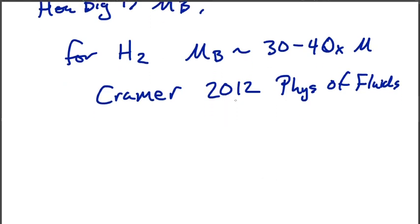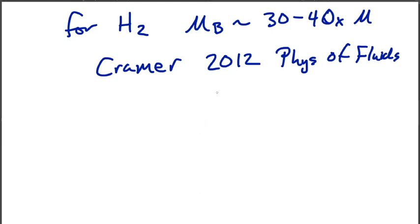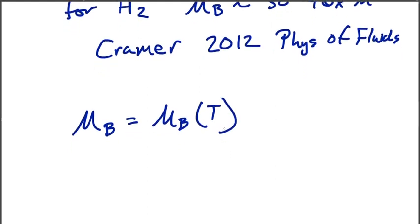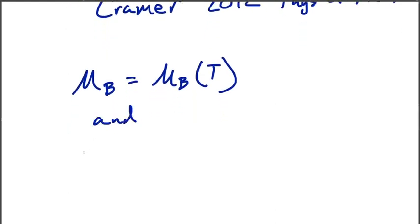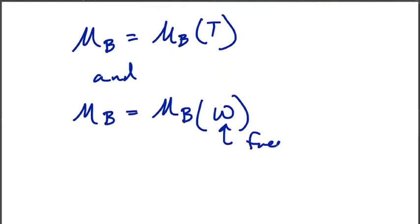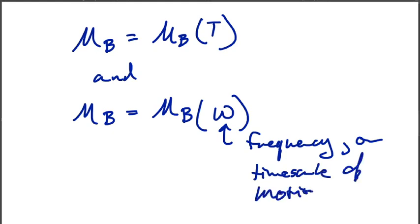Something else about mu_B is that mu_B is generally dependent on the thermodynamics. So mu_B is a function often of the temperature, can vary substantially with temperature. And mu_B is also very tied, unlike the dynamic viscosity, to the rate at which the fluid flow is happening. If we have some sort of frequency or timescale of motion, the bulk coefficient of viscosity can have a dependency on the frequency of motion or the timescale of motion.